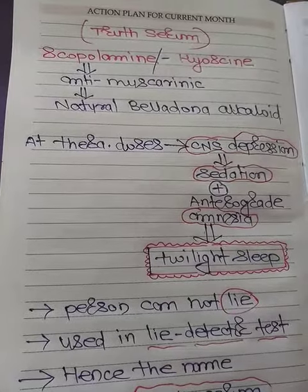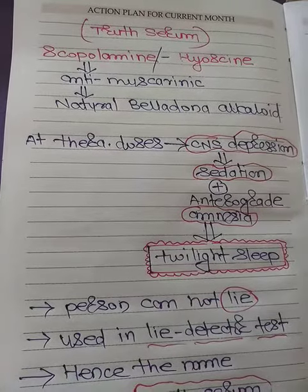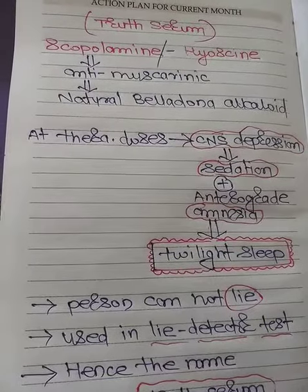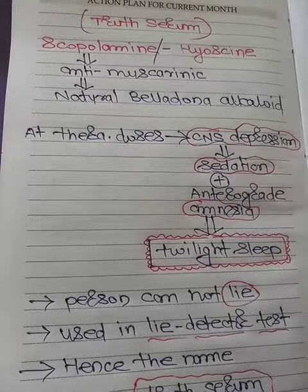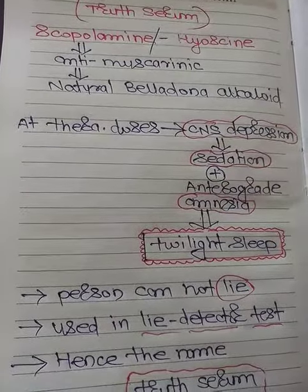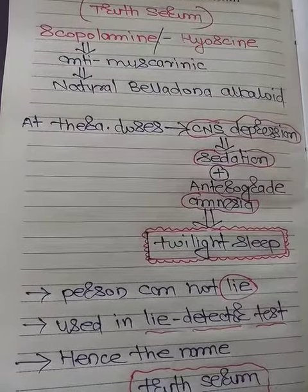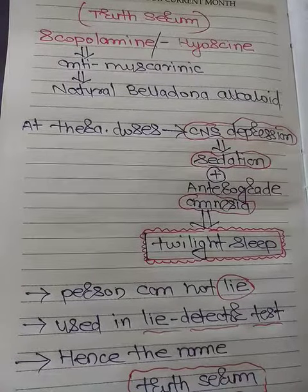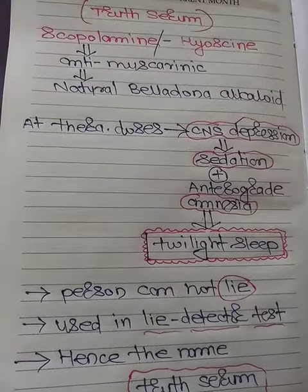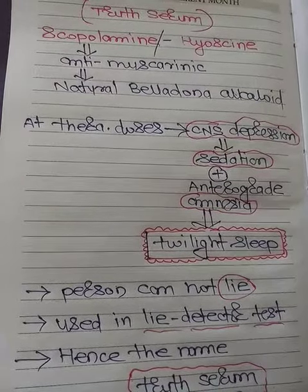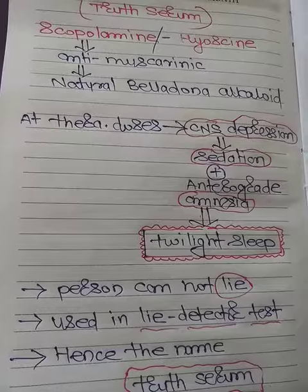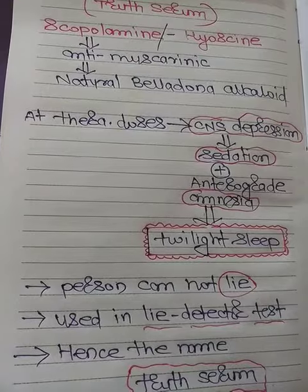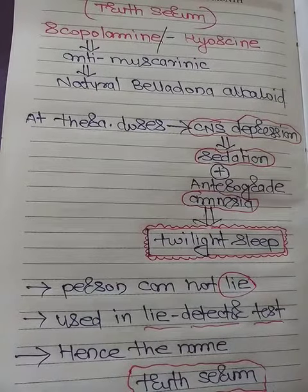It produces CNS depression and sedation, and along with that it also causes anterograde amnesia. Because of that, the patient enters a particular state called twilight sleep. Because of CNS depression and anterograde amnesia, there is a state called twilight sleep, in which a person cannot lie.